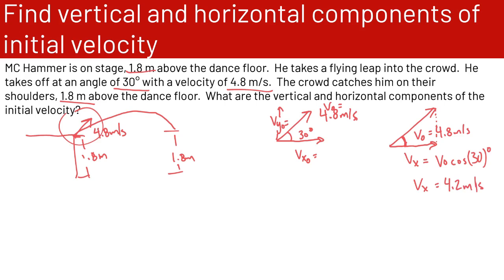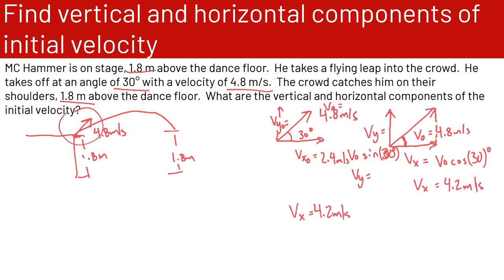For the vertical direction, Vy is the opposite side of the triangle, so Vy equals V naught times sine theta — sine 30 degrees. That gives Vy equal to 2.4 meters per second. So we have our vertical and horizontal components of the initial velocity: Vx equals 4.2 meters per second, and Vy equals 2.4 meters per second.